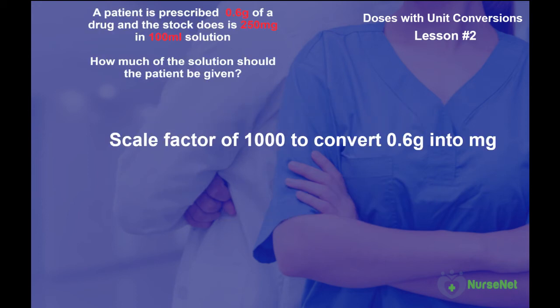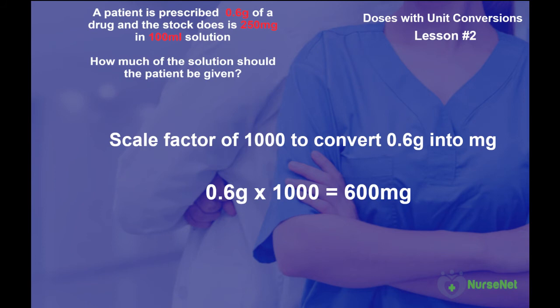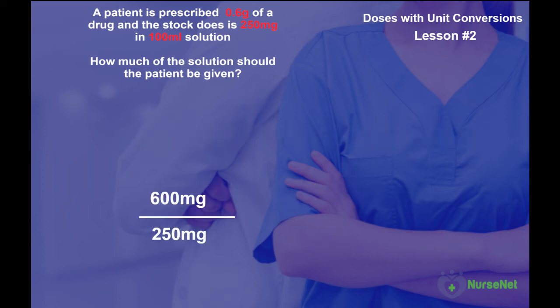We should have noticed that we need to multiply 0.6 grams by a factor of 1,000 to make it into milligrams. Therefore 0.6 multiplied by 1,000 gives us 600 milligrams. 600 milligrams divided by 250 milligrams gives us 2.4. 2.4 multiplied by 100 millilitres gives us 240 millilitres of solution. Therefore our answer is 240 millilitres.